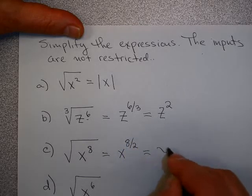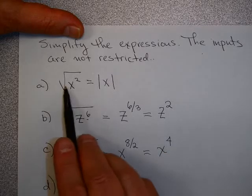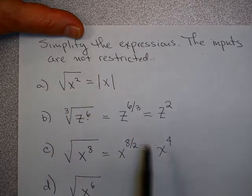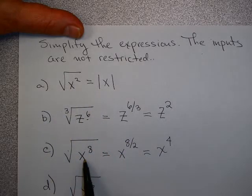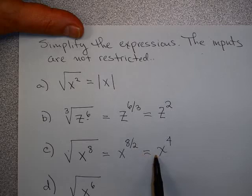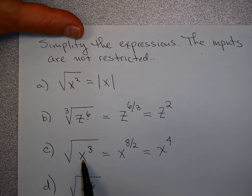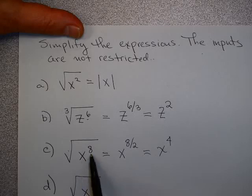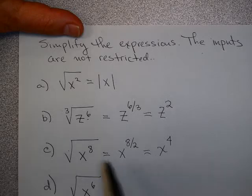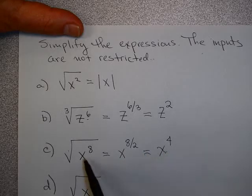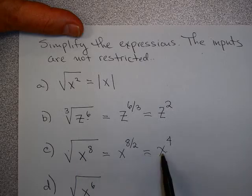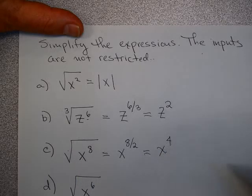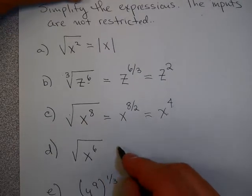The square root of x to the 8th is x to the 8th over 2, which is x to the 4th. Do I need absolute value? It's a square root. Why would this one be different than number a? The reason part c would be different is that x to the 4th is always positive, regardless of whether I put in a positive or negative number. It doesn't matter whether x is positive or negative. That answer will be the same because of this 4th power.